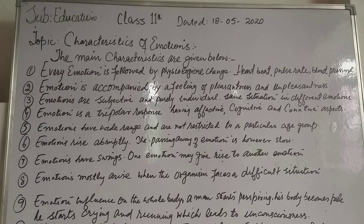Number five: emotions have a wide range and are not restricted to a particular age period. They occur in children, adolescents, and adults also.